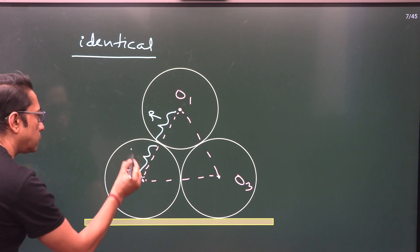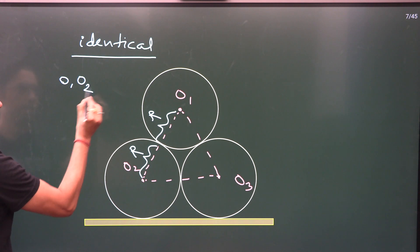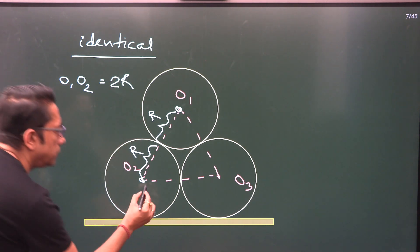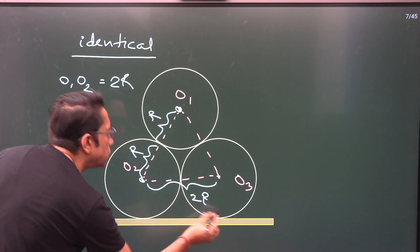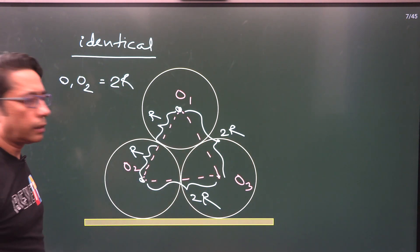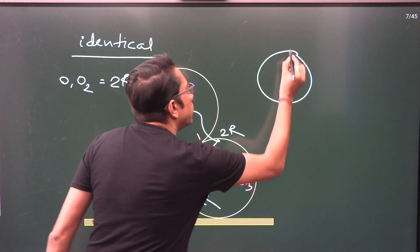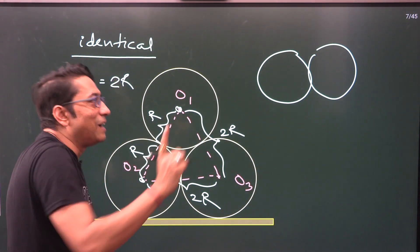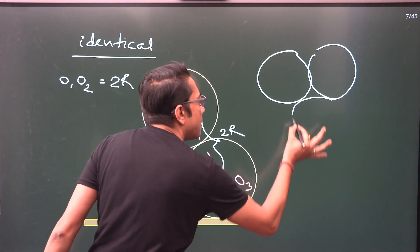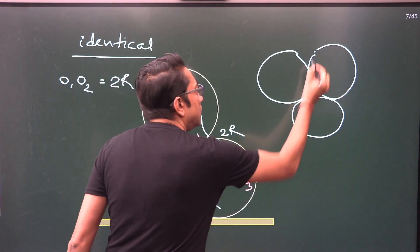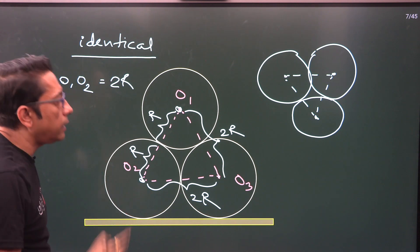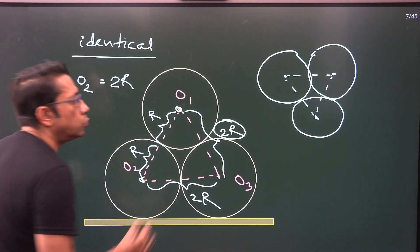So what would be the distance O1, O2? This point to this point, how much? R plus R, 2R. So this is for all. This will also be 2R. And this will also be 2R. You are intelligent. I know what you are thinking. Okay sir, this would be an equilateral triangle of each side 2R. Yes, you are right. That means whenever you get three circles, if there are three circles, we will be doing what? We will join their centers, and that will give you an equilateral triangle of each side, how much? 2R. What is the benefit?